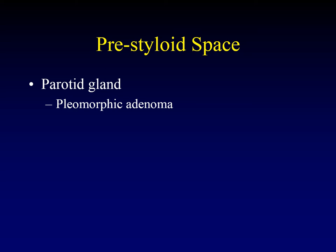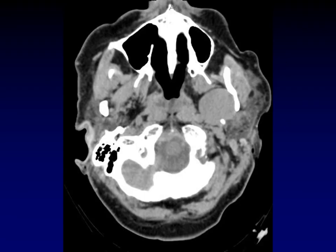Statistically, pleomorphic adenoma is going to be the most common lesion in the pre-styloid space — even more common than masses arising in the superficial lobe. Here's a classic image of a pre-styloid parapharyngeal mass from an incidental finding on head CT. Here's the styloid process right in front of it; you can see it is displacing the parapharyngeal fat predominantly medially. This is, in fact, a pleomorphic adenoma of the deep lobe of the parotid.